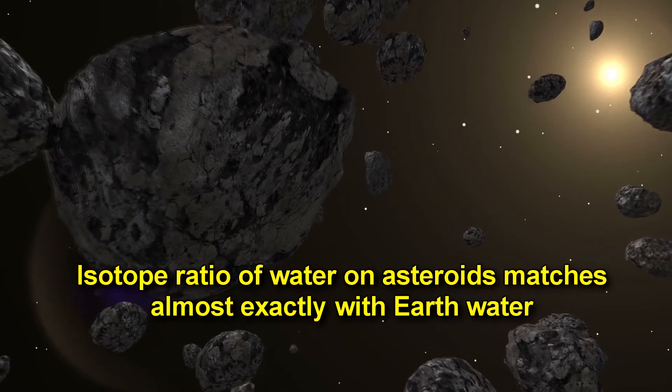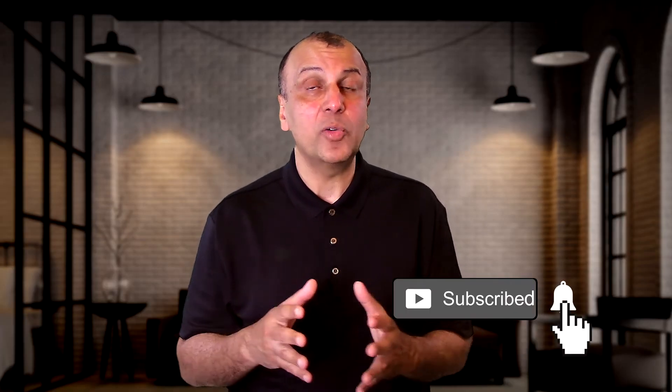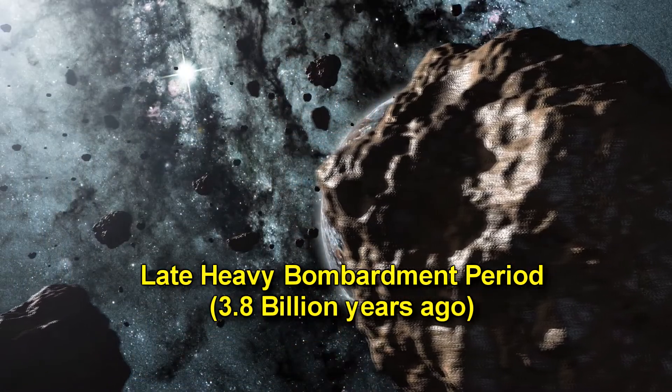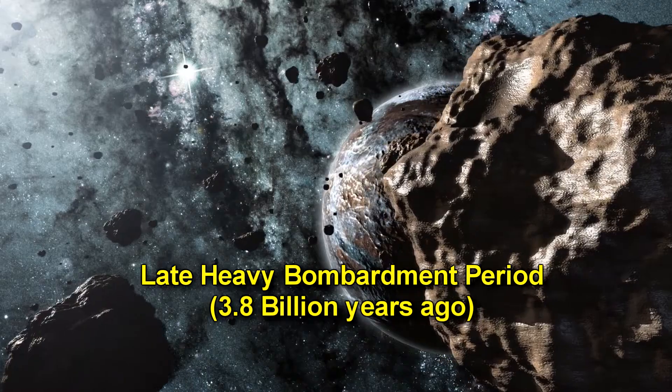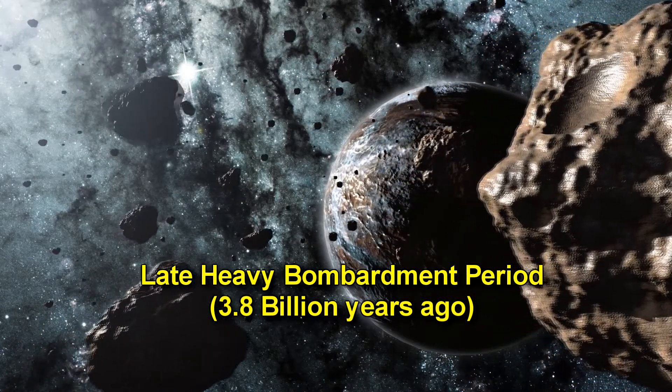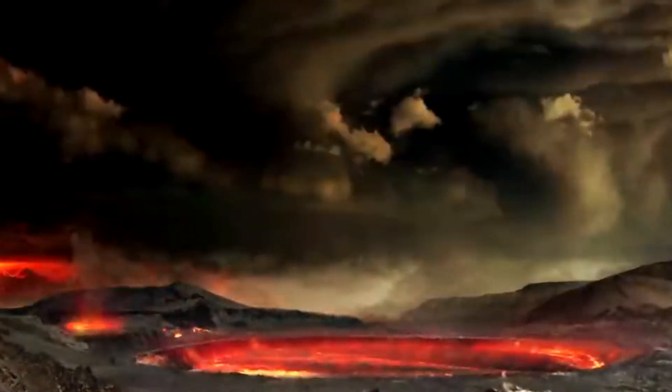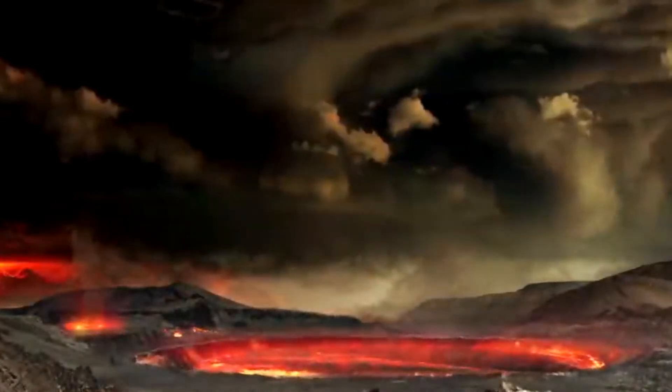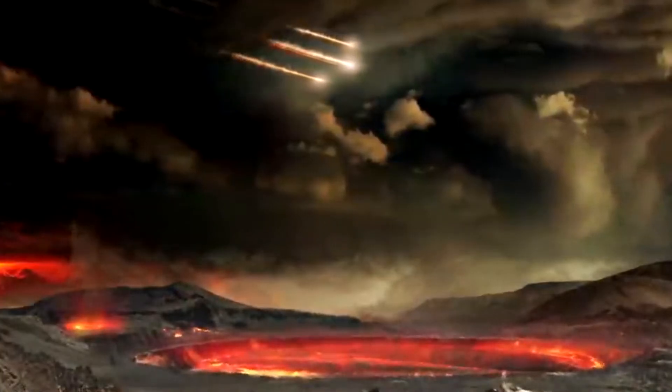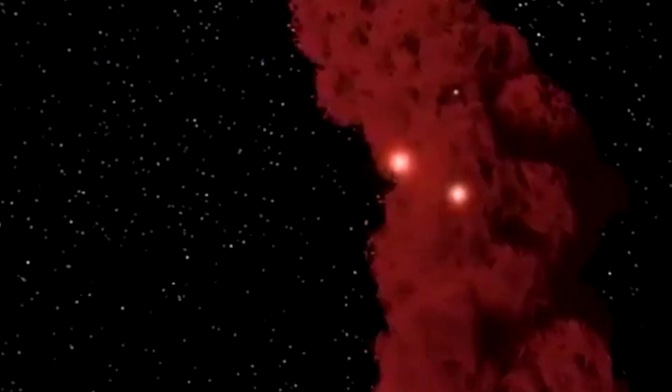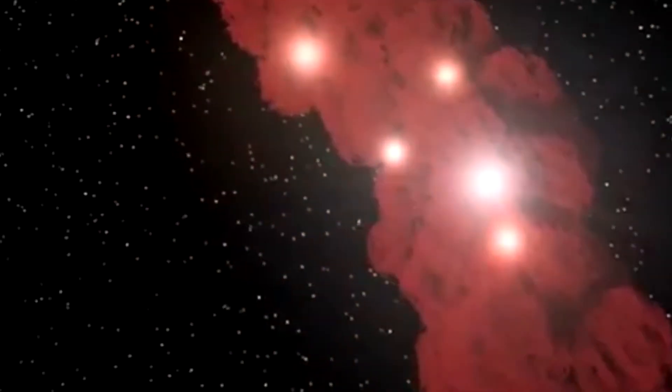So it turns out that the dinosaur killing asteroid was not the only one that hit the Earth. Many such asteroids, probably hundreds, or thousands of them, hit the Earth early in its history. This period even has a name. It's called the Late Heavy Bombardment Period of Earth. And it happened about 3.8 billion years ago, about 600 million years after Earth's formation. And these asteroids were formed from the same dust, ice, and other substances as the early Earth. And all those substances probably came from multiple supernova explosions spewed out into space over billions of years since the beginning of the universe.